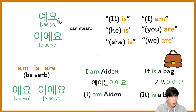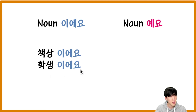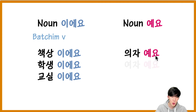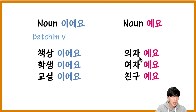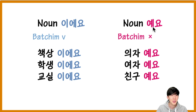Okay, but how do we know which one to use — 이예요 or 예요? Let's have a look. 책상이예요. 학생이예요. 교실이예요. In this case I put 이예요. Why? Because there is 받침 — the last consonant, the final consonant. That's why I put 이예요. But here: 의자예요. 여자예요. 친구예요. 의자 is chair, 여자 is woman, 친구 is friend — no 받침. That's why I put 예요. One more time: with 받침, we put 이예요 — the longer one. With no 받침, we put 예요. 괜찮아요?